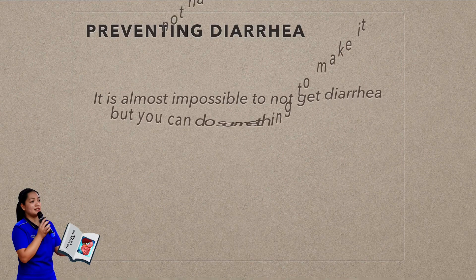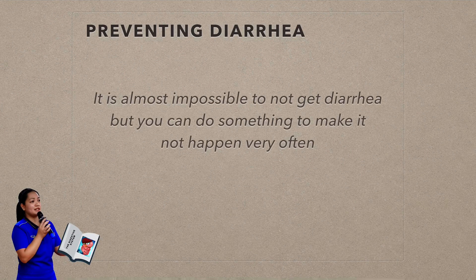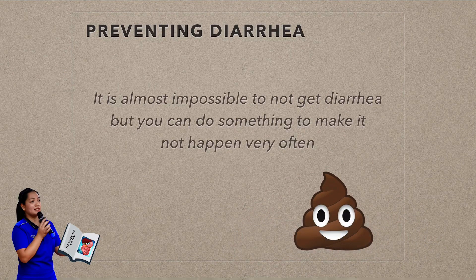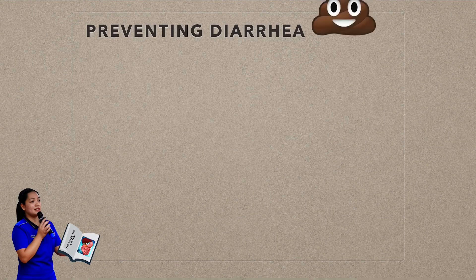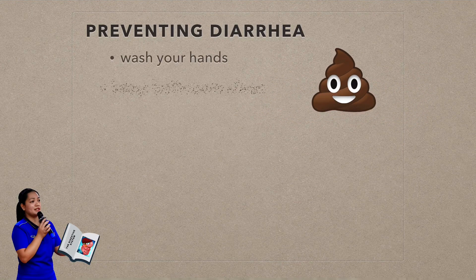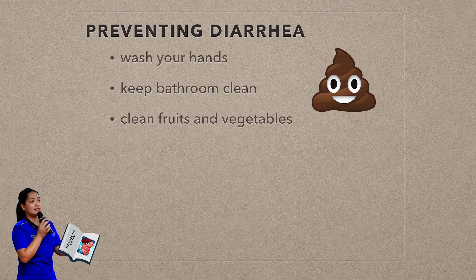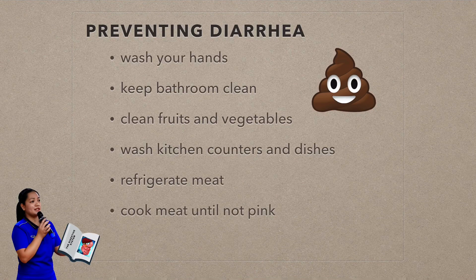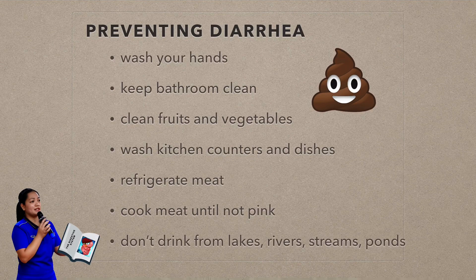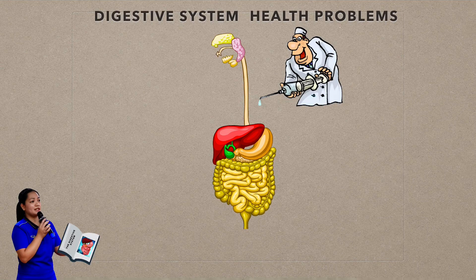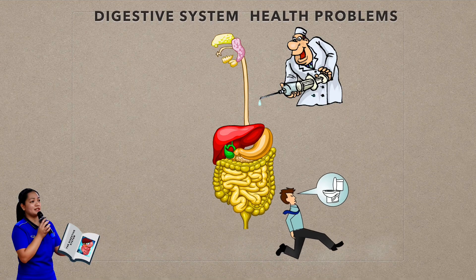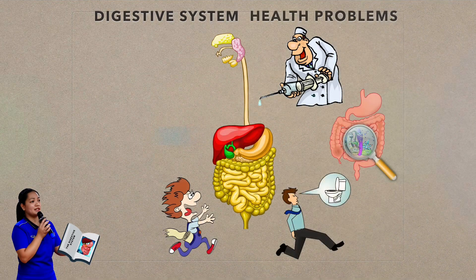It is almost impossible to never get diarrhea, but you can do something to make it happen less often. How? Wash your hands, keep the bathroom clean, clean fruits and vegetables, wash kitchen counters and dishes, refrigerate meat, cook meat until not pink, and don't drink water from lakes, rivers, streams, or ponds. Diarrhea should go away in a few days without treatment — until you feel better, rest, drink enough fluids, and watch what you eat.